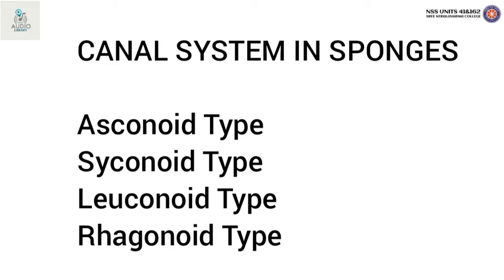The flagellated beating of choanocytes maintains a constant circulation of water. The canal system of sponges serves much the same purposes as the circulatory system does in higher animals.